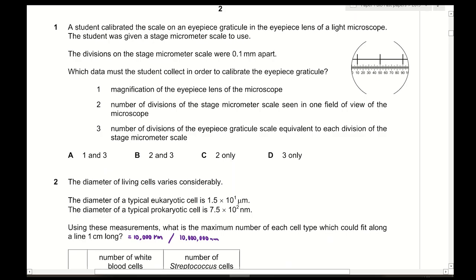Question 1: A student calibrated the scale on an eyepiece graticule in the eyepiece lens of a light microscope. The student was given the stage micrometer scale to use. The divisions on the stage micrometer scale were 0.1 millimeters apart. Which data must the student collect in order to calibrate the eyepiece graticule? First, you must distinguish between the eyepiece graticule and the stage micrometer.